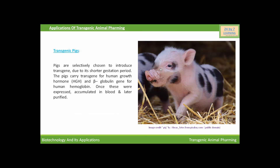Now, come to transgenic pigs. Pigs are selectively chosen to introduce transgenes due to their shorter gestation period. The pigs carry the transgene for human growth hormone (HGH) and the beta-globulin gene for human hemoglobin. Once these genes are expressed and accumulated in blood, they get purified and are ready for marketing. These are some of the key applications of transgenic animals.